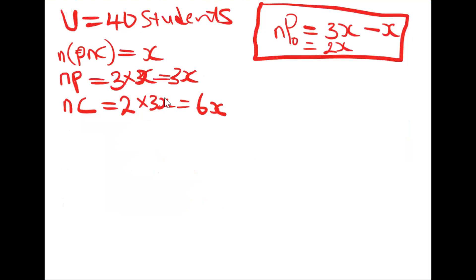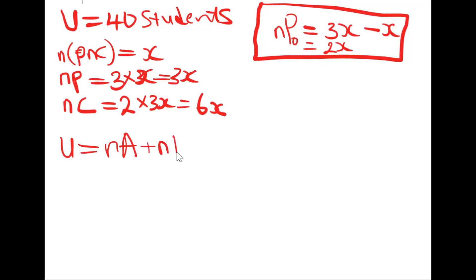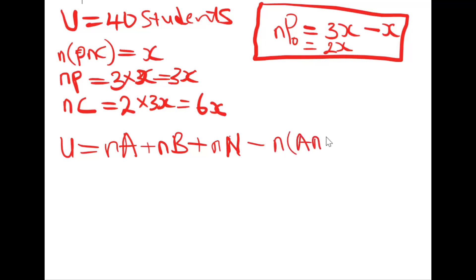Now we need to find the value of x. Using our formula: the universal set U equals the number of A plus the number of B minus the number of A intersection B.